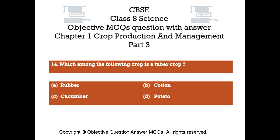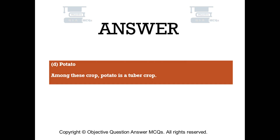Question number 14. Which among the following crop is a tuber crop? Option A: Rubber. Option B: Cotton. Option C: Cucumber. Option D: Potato. The right answer is option D — Potato. Among these crops, potato is a tuber crop.